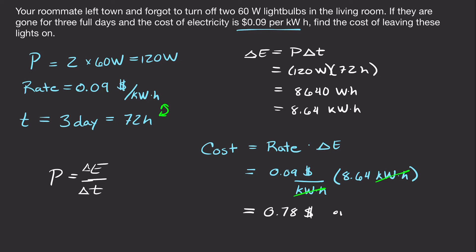So we rewrite it like this, or 78 cents. And so leaving two 60-watt light bulbs on for three days really isn't going to cost that much. So maybe you shouldn't get too mad at your roommate.